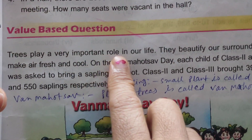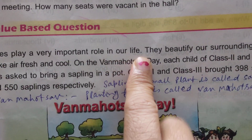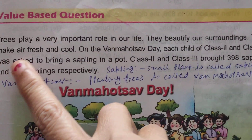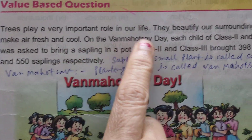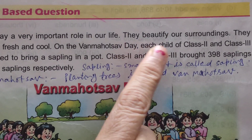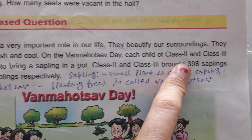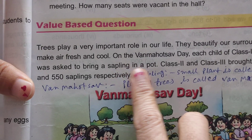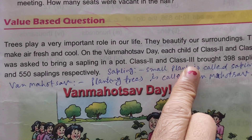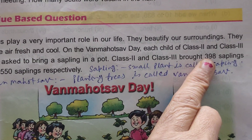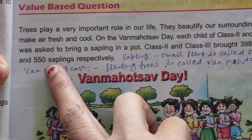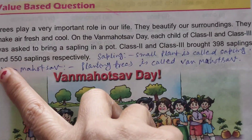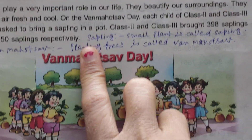Trees play a very important role in our life. They beautify our surroundings. They make air fresh and cool. On the 1 Mohatsub day, each child of class 2 and class 3 was asked to bring a sapling in a pot. Class 2 and class 3 brought 398 saplings and 550 saplings respectively.